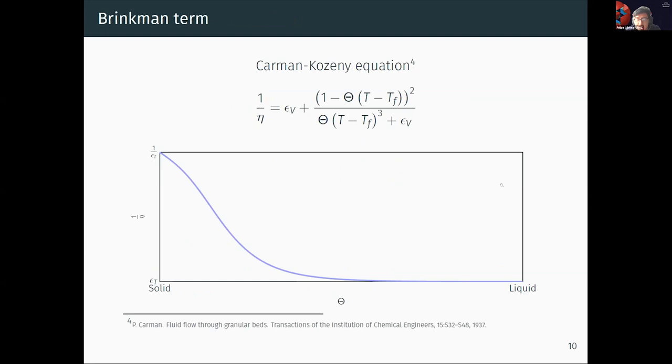In order to add this Brinkman penalization, we assume that our domain is a porous media with variable permeability, where the inverse of the permeability is given by the equation that you see on the screen, which is based on the Carman-Kozeny equation. Here, the role of the porosity is taken by the phase indicator function, which was introduced in the Dirac approximation, because the idea is that the porosity in the solid region is 0 and in the liquid region is 1. We also add an extra epsilon parameter in order to avoid possible overflow. As you can see on the graph on the screen, in the solid region, we have a low permeability associated with the epsilon constant, and in the liquid region, a high permeability associated with the inverse of the epsilon constant. Then the behavior is as expected for this permeability.